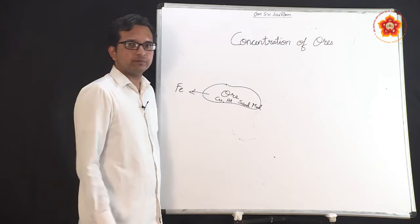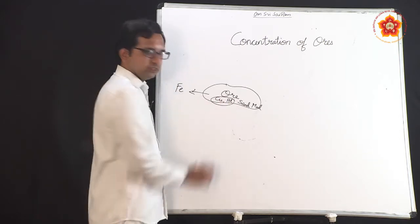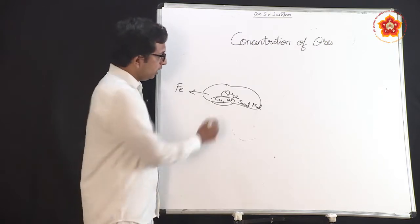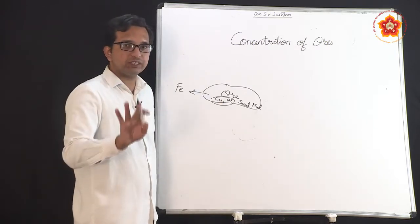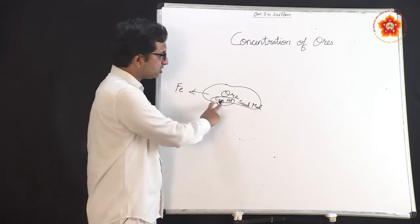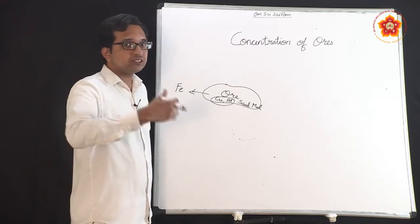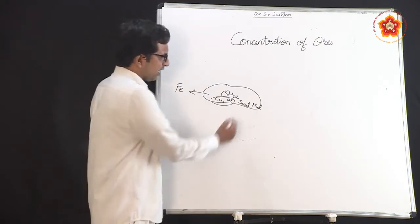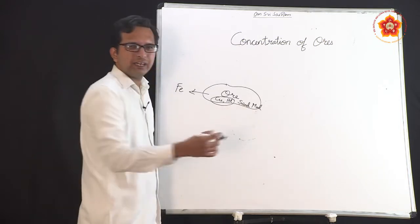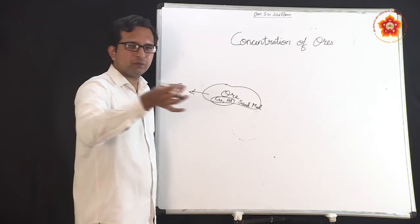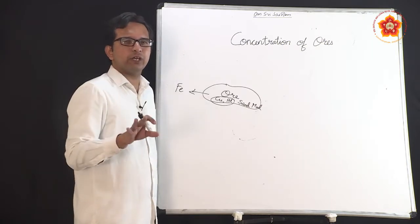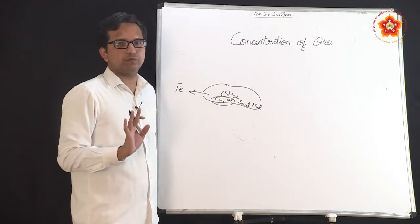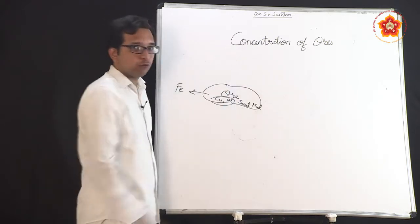To remove certain impurities, you cannot employ a simple process — you need chemical reactions, which we will study in further parts. But at the start, you can remove sand, mud, and other particles by a physical process itself.